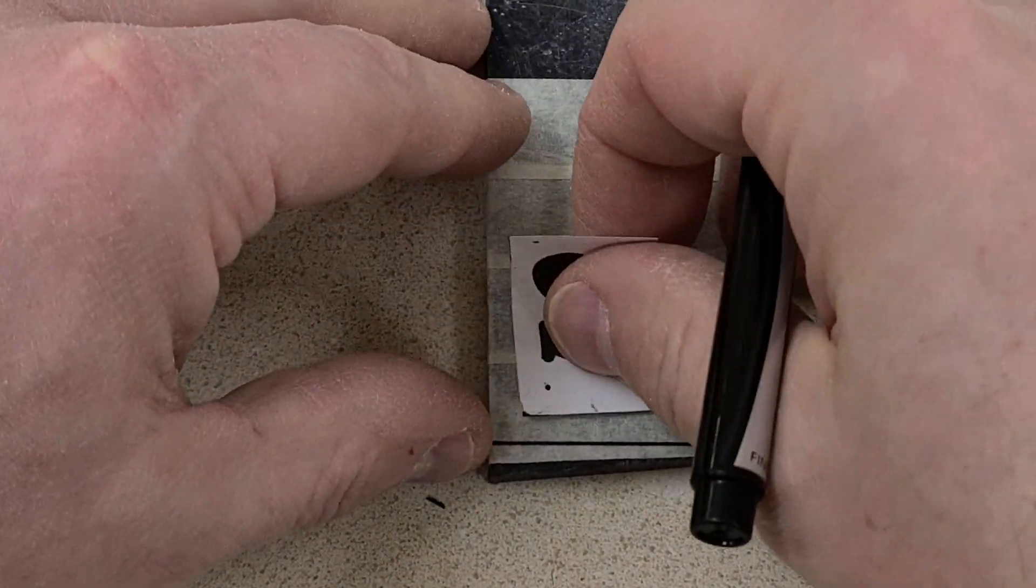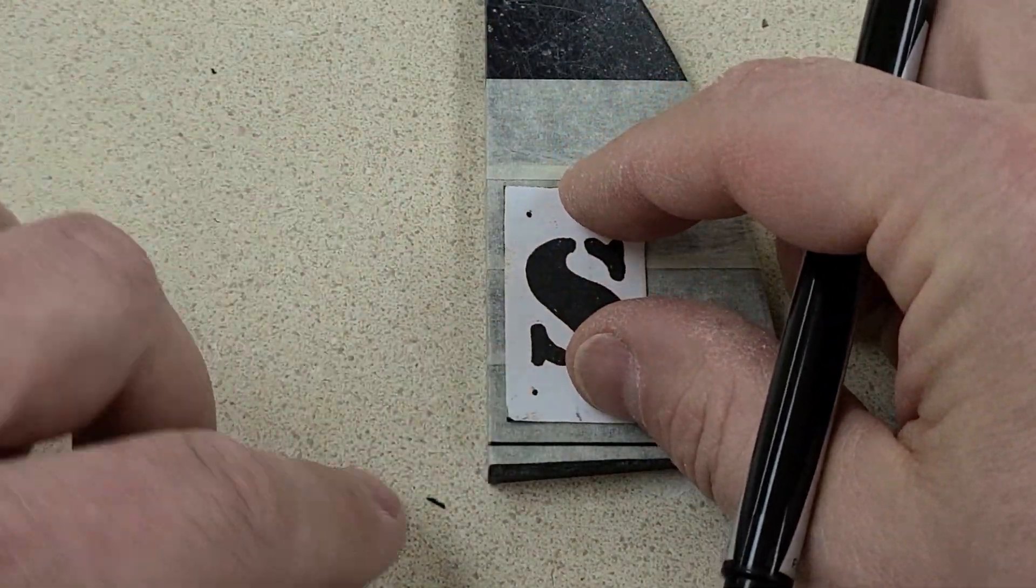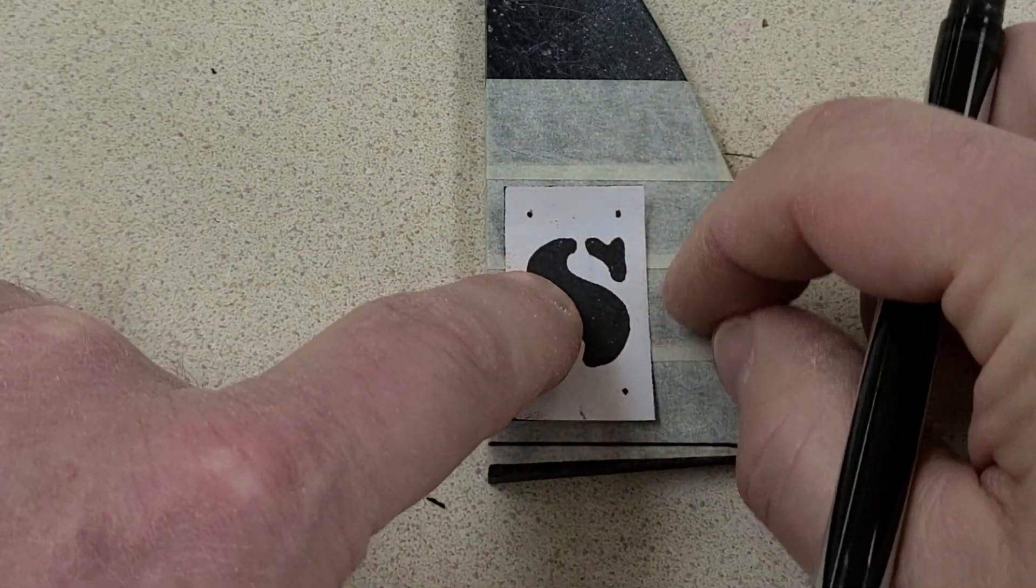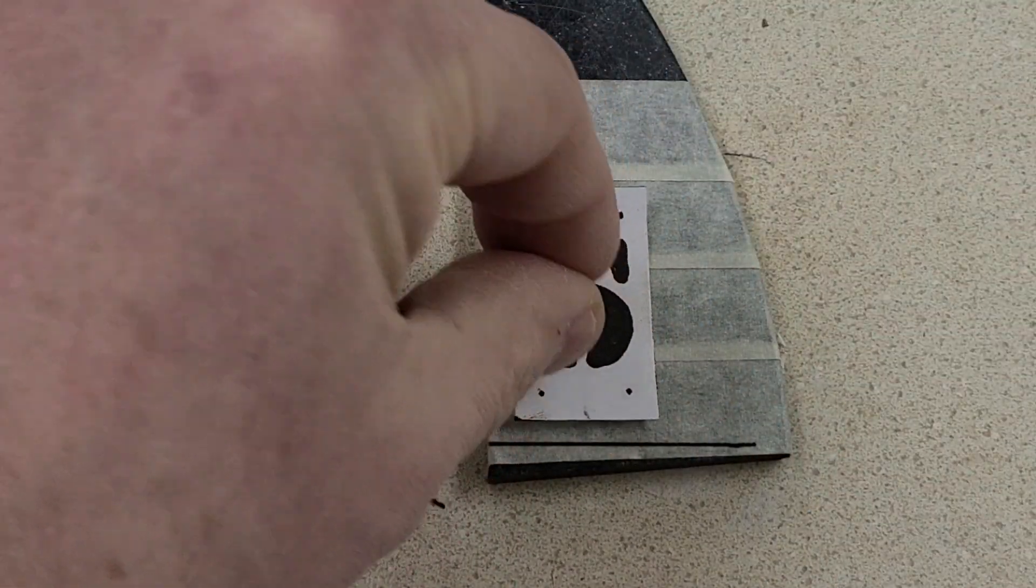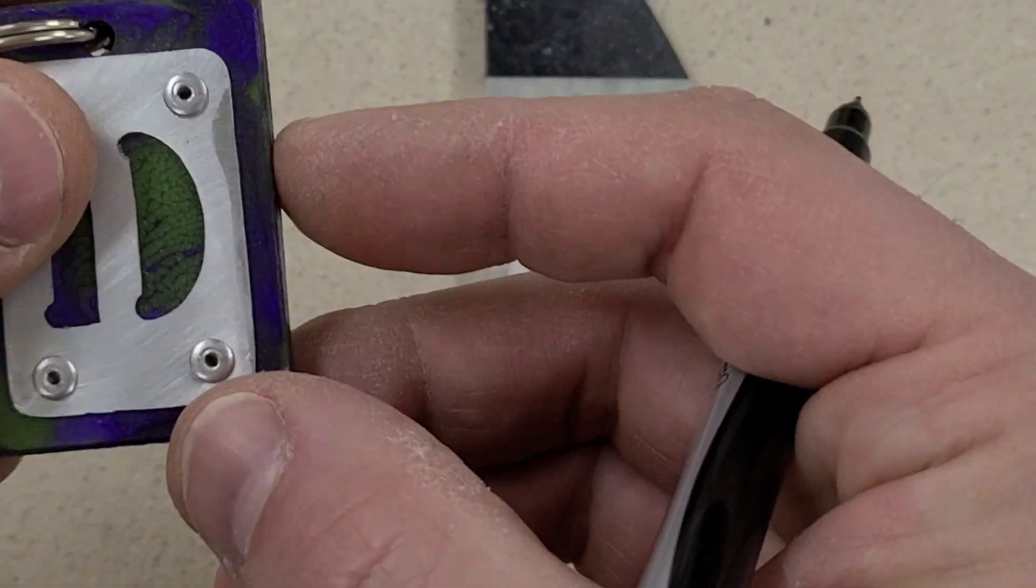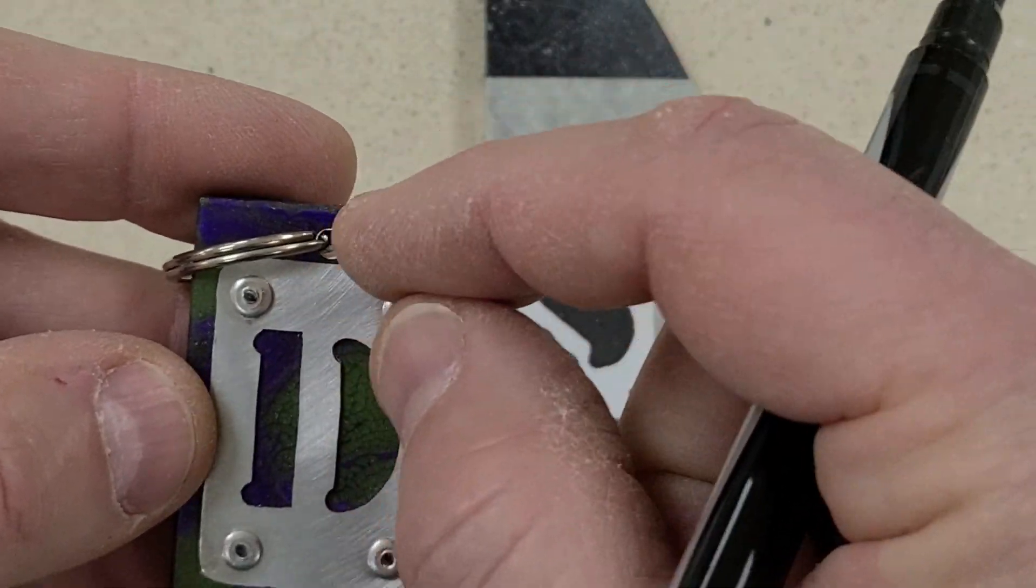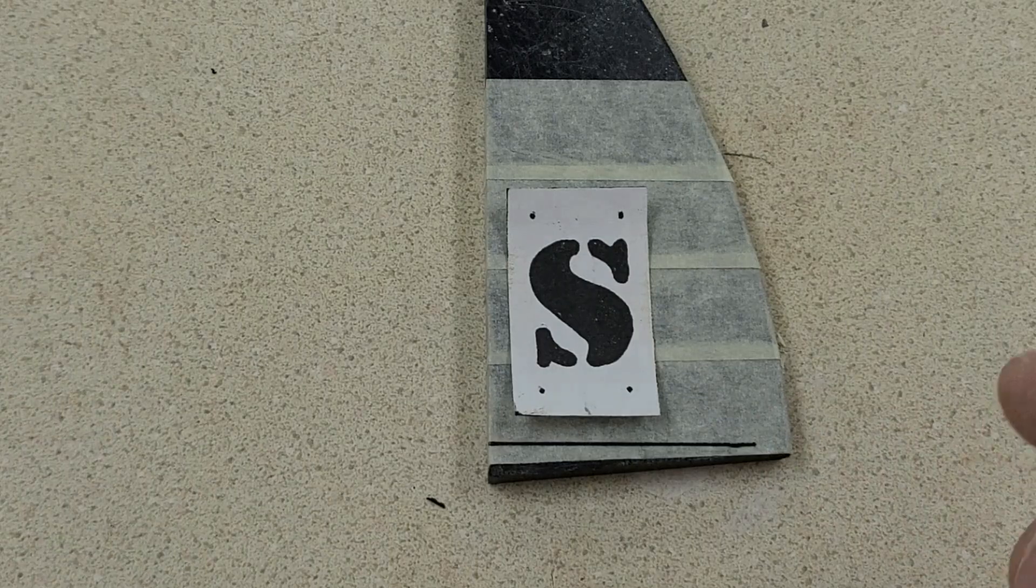So I'm gonna lay this in here and I'm gonna have an eighth inch extra all the way around my piece of plastic and I'm gonna have a quarter inch at the top so that I have room for the keychain. So I'm gonna start measuring that out now.